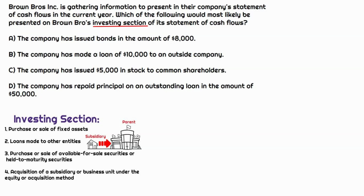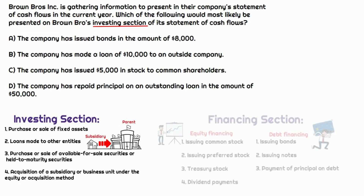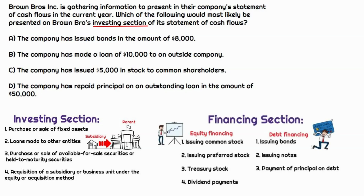The company has issued bonds in the amount of $8,000. When a company issues bonds, that's a form of debt financing — they issue debt to get cash to finance the business. That goes in the financing section under debt financing. Next: the company made a loan of $10,000 to an outside company. The key word is 'loan,' but because we're making a loan to an unaffiliated outside company, that's going to be an investing activity — number two in the investing visual. Presumably the company would get something in return, likely interest income.